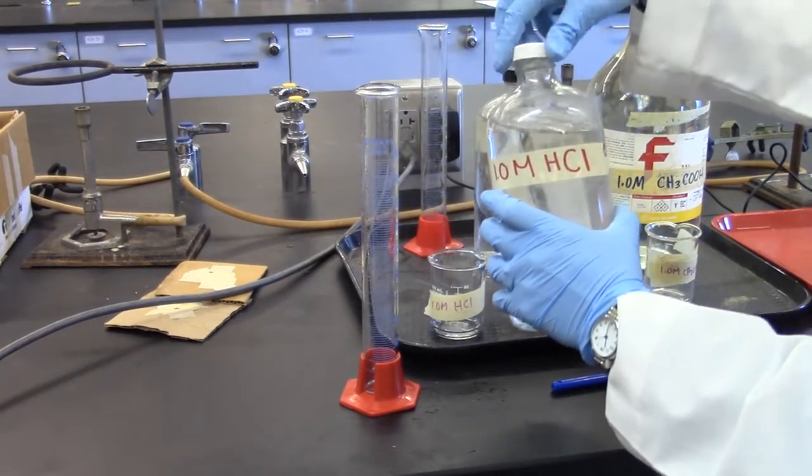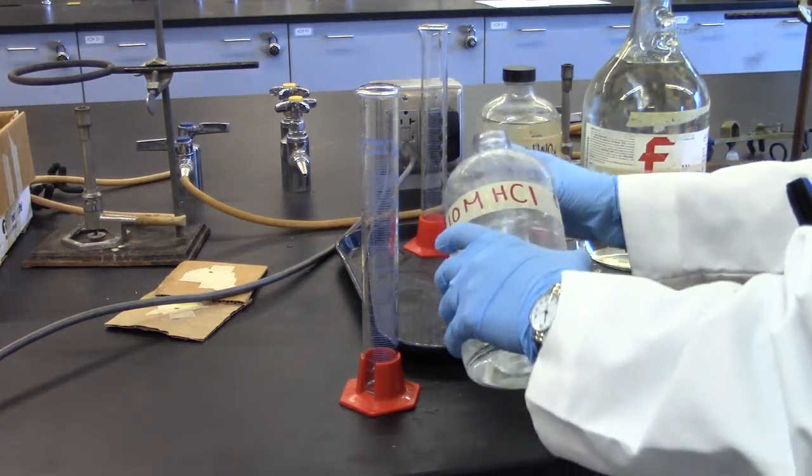In a graduated cylinder, measure out 100 milliliters of one molar hydrochloric acid.